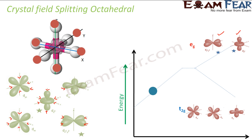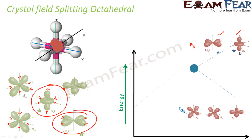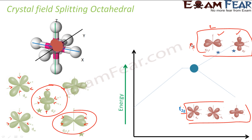When the electrons approach, the total energy goes up and then splits into two groups. The two orbitals marked with stars get higher energy, and the other three orbitals get lower energy. This lower group is called t2g — notice three terms, three orbitals. The higher group is called eg — two terms, two orbitals. So t2g has three orbitals and eg has two orbitals — that's a useful way to remember.